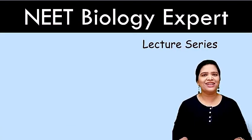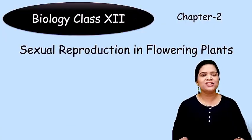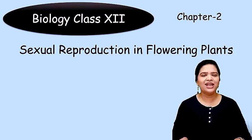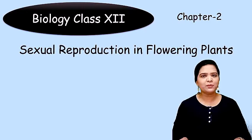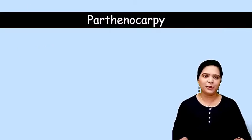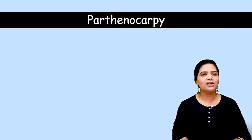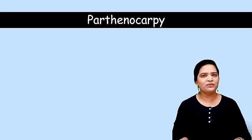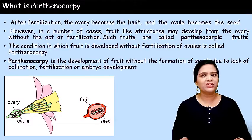Hello friends, welcome back to channel NEET Biology Expert. I am Dr. Parveel. In this lecture series we are studying class 12 biology chapter 2, sexual reproduction in flowering plants. In this particular lesson we are going to study the last lesson of this chapter, that is parthenocarpy. We will cover what is parthenocarpy, its different types, and the significance of parthenocarpy.